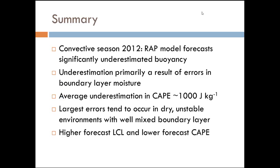So just a quick summary: the convective season 2012 RAP model forecasts were significantly underestimating buoyancy. The underestimation seemed to be primarily a result of errors in the boundary layer moisture, which resulted in underestimation of CAPE of 1,000 joules per kilogram or more. The largest errors tended to occur in dry, unstable environments with a well-mixed boundary layer, leading to those higher lapse rates and warmer surface temperatures, a high LCL, and as the model warmed and dried that further, you'd end up with an even higher forecast LCL that further lowered or eliminated CAPE.